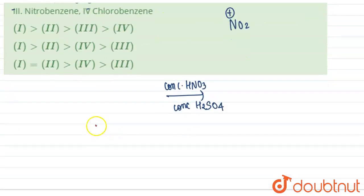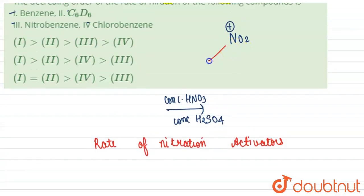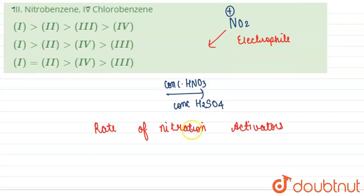If we talk about the rate of nitration, the rate of nitration is increased by activators. Since we have to add an electrophile, we will require a species that is increasing electron density.